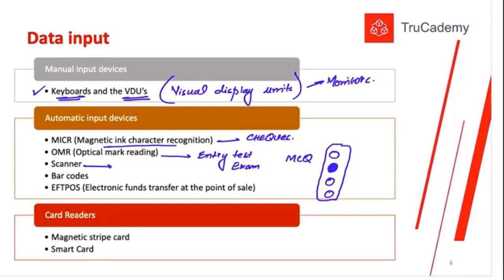Scanners are a very common device — you place a piece of paper on the scanner and it automatically takes a picture of it. Nowadays it's more common to take photos of documents and convert them to digital form. Then there are barcode readers — specialized devices that read barcodes on products. You may notice black and white strips on the back of products; these strips contain unique information that only barcode readers can read.